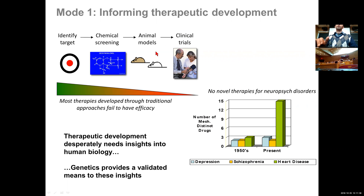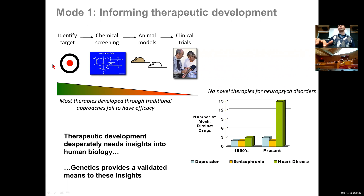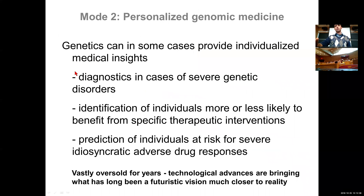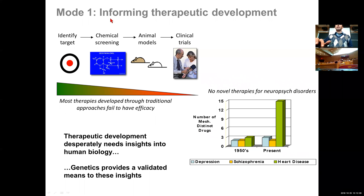They can figure out how to modulate whatever target they're interested in, but that target is not coming from genetic studies. When studies were conducted asking what fraction succeed at the end if their initial target was based on genetics, they found an almost two-fold increase in the rate of success at phase two and phase three clinical trials for efficacy. So in order to define the best targets, we need genetic data — this is the first mode, informing therapeutic development and building better targets so that we can develop better therapies.